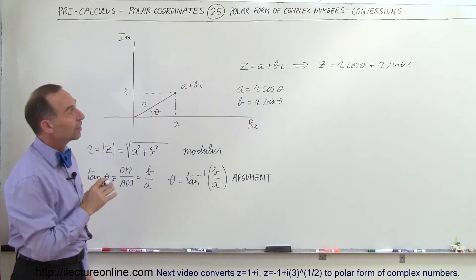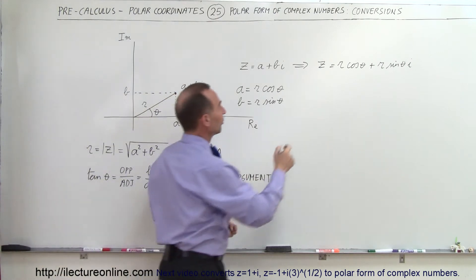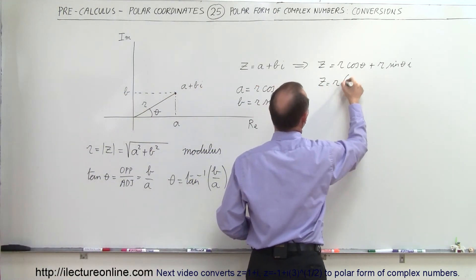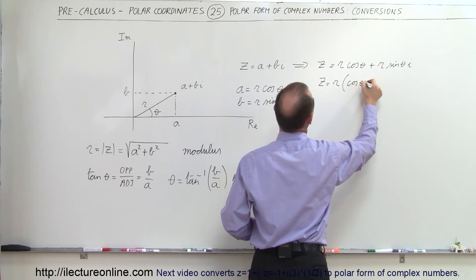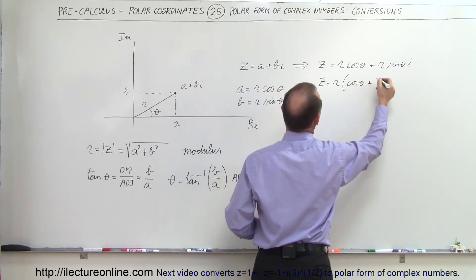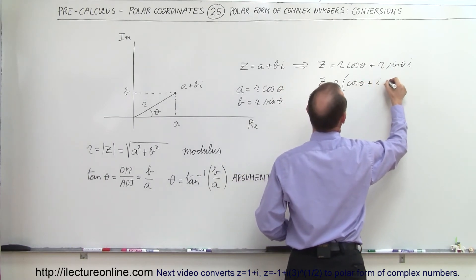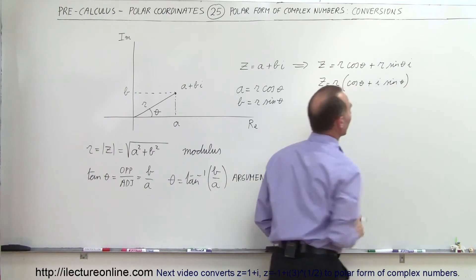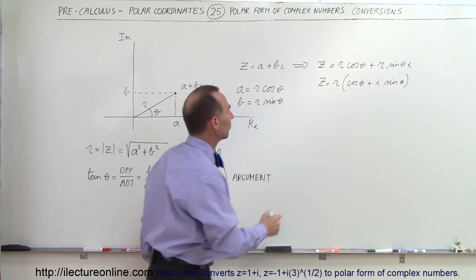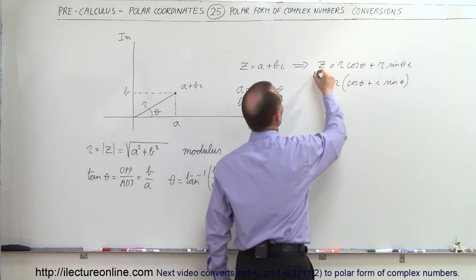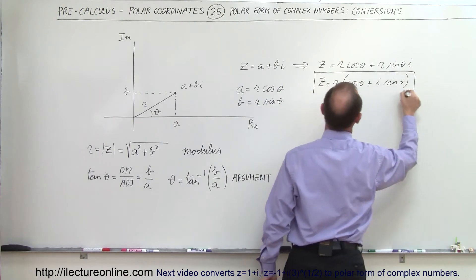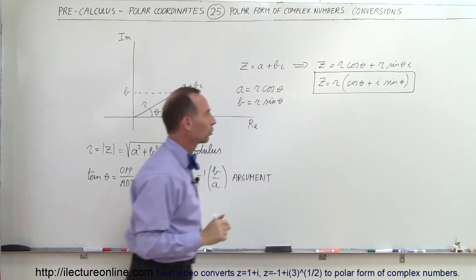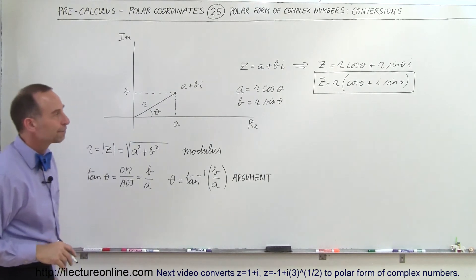You can factor out an R, so you can say that Z is equal to R times the quantity cosine of theta plus i times the sine of theta. This is the way in which you can write a complex number in terms of the polar coordinates R and theta.